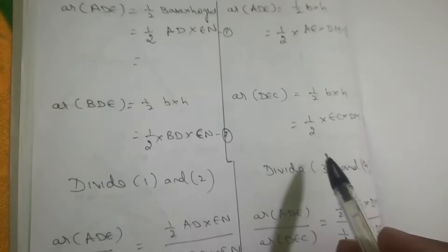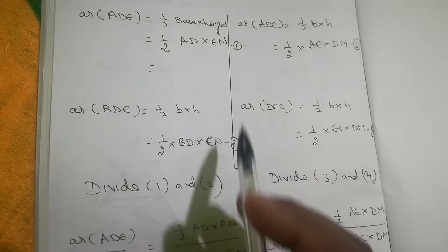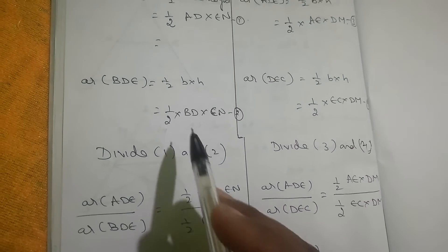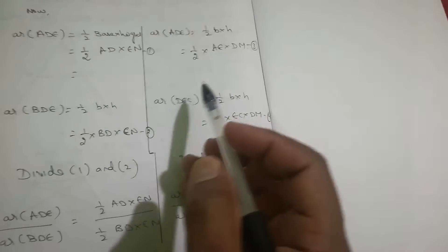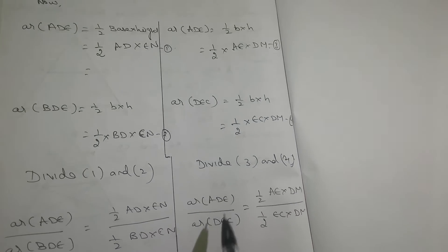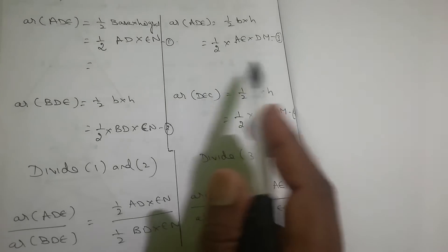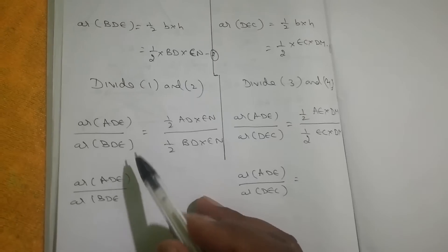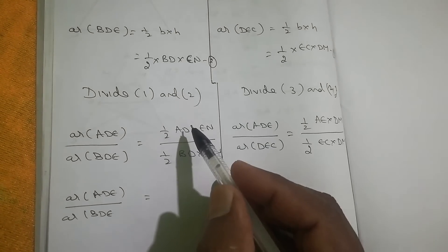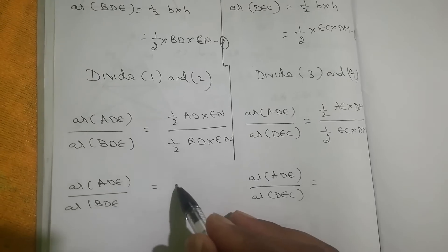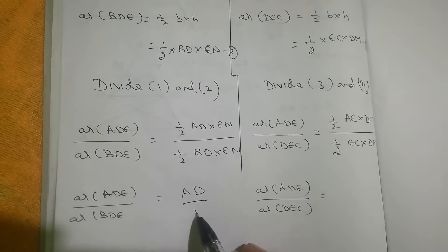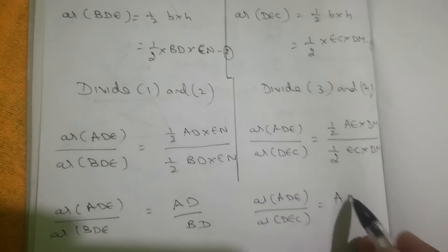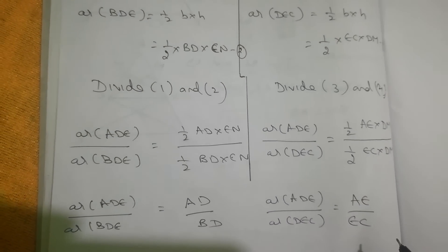Now divide equation 1 by equation 2: area of triangle ADE divided by area of triangle BDE equals (half · AD · EN) divided by (half · DB · EN). The halves and EN cancel, giving AD/DB. Similarly, dividing equation 3 by equation 4: area of ADE divided by area of DEC gives (half · AE · DM) divided by (half · EC · DM), and halves and DM cancel, giving AE/EC.